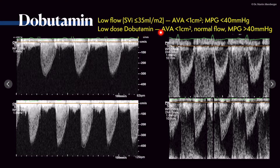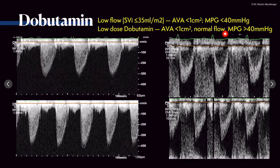We use low-dose dobutamine up to 20 micrograms per kilogram per minute to determine whether the aortic valve area is truly below one square centimeter when we have normal flow — meaning the stroke volume index rises above 35 mL/m² and the mean pressure gradient exceeds 40 mmHg. We also need to assess contractile reserve. In this patient, with low-dose dobutamine, the mean pressure gradient did rise above 40 mmHg while the aortic valve area remained below one square centimeter, confirming true severe aortic stenosis.